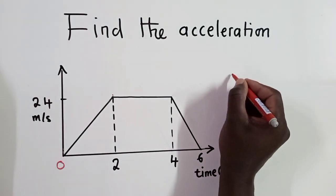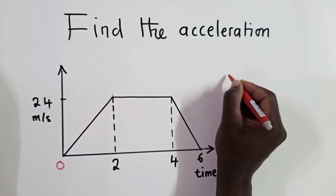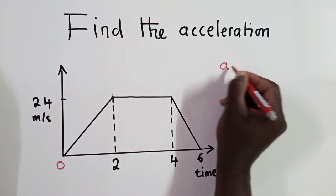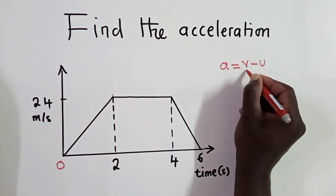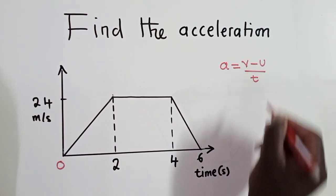So the first thing is to know the formula for finding acceleration, which is acceleration is equal to final velocity minus initial velocity over time. So this is the formula that we must know. So follow me, watch the video up to the end. I'm going to show you two methods on how you can find the acceleration.